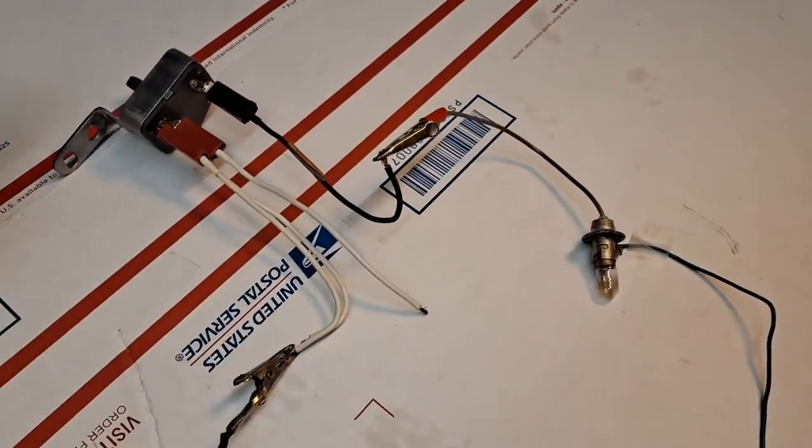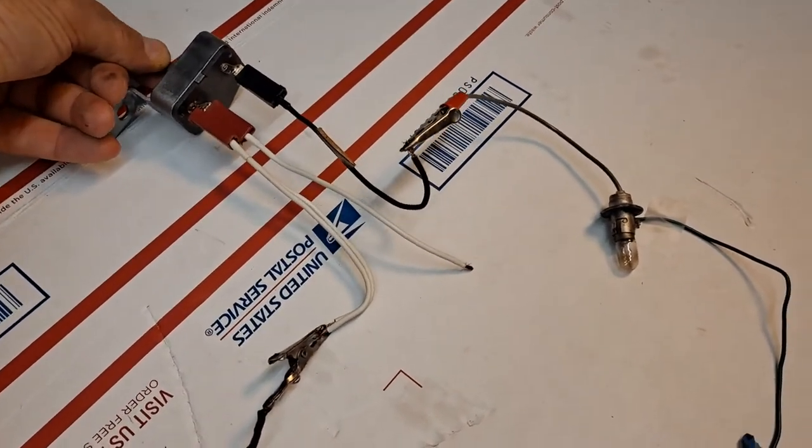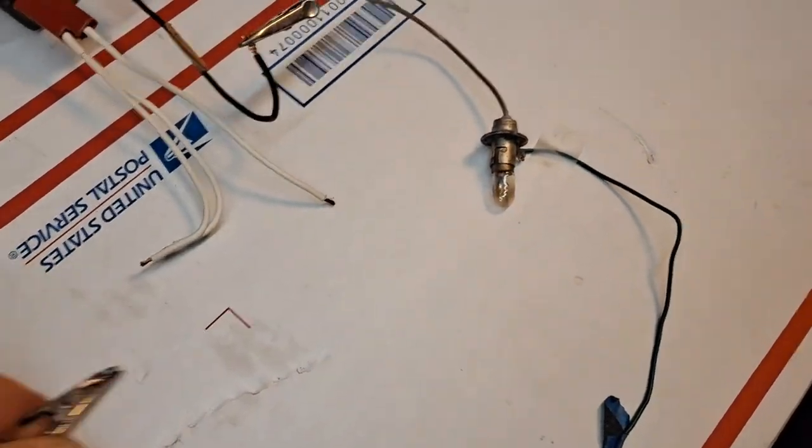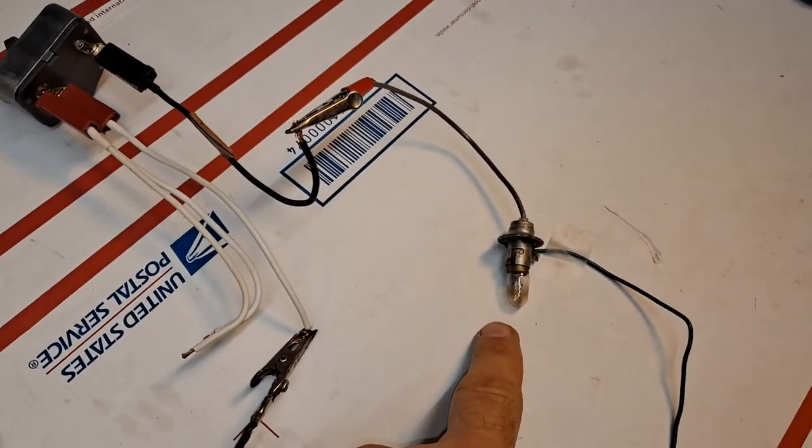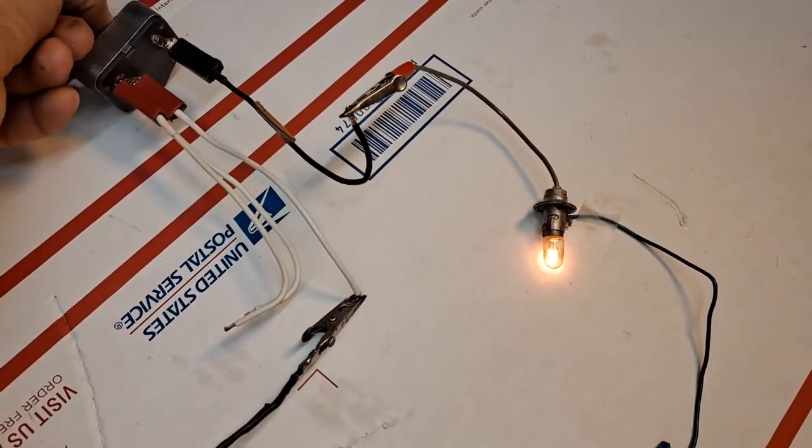We'll be looking for the light bulb to come on. I'll move it to the first position and we see the light bulb come on. Now we'll go ahead and move it to the second position and there's no electrical continuity. And we'll move it to the first position and the light bulb comes on.